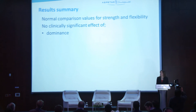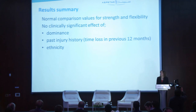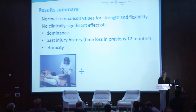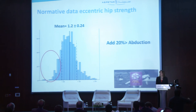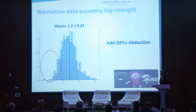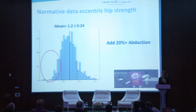We found no clinically significant effect of dominance, recent past injury history, or ethnicity on these normal values — remember, this is the cohort without any groin symptoms. Another interesting finding was that adduction was about 20% stronger than abduction when measured with this testing, giving a normal ratio of 1.2 for this football cohort. If a player sits outside this normal range, we can provide valuable information to medical staff and the coach that he may be lacking strength and his ratio places him in a vulnerable area, making an injury prevention program advisable.